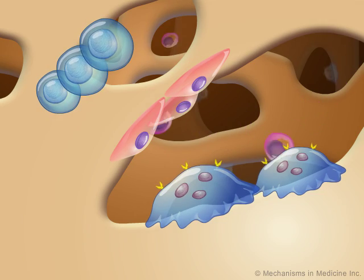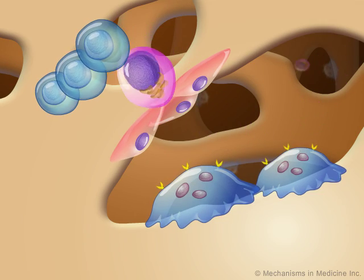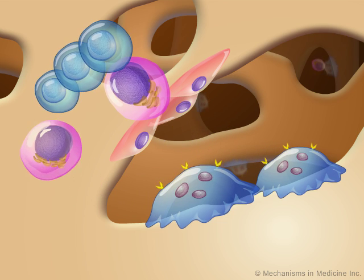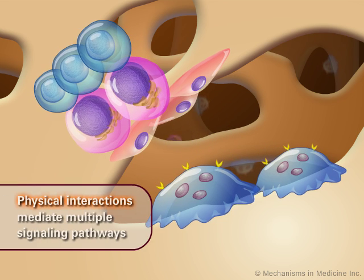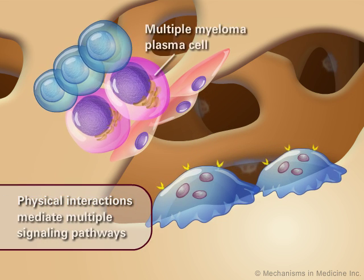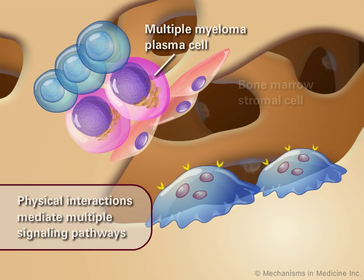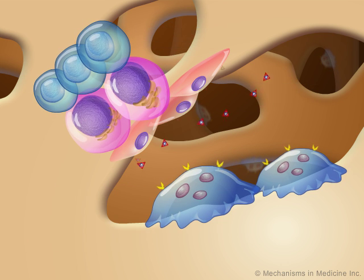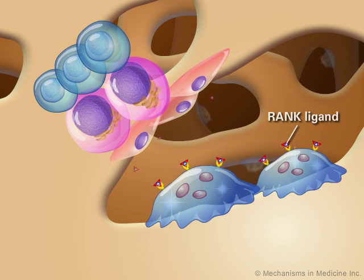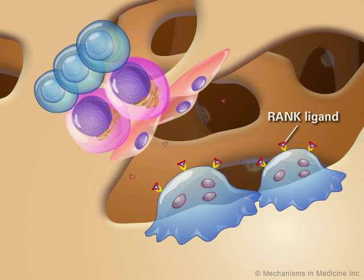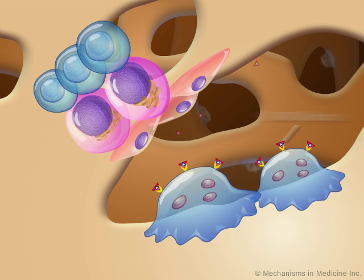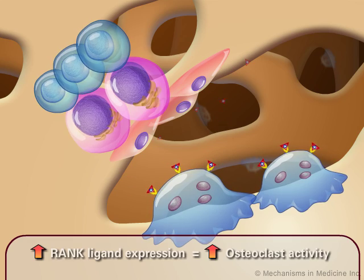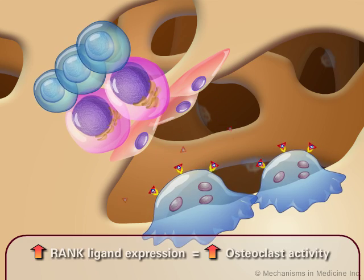This imbalance is maintained through the activation or repression of multiple signaling pathways that are mediated by a variety of physical interactions between multiple myeloma plasma cells and bone marrow stromal cells. For example, RANK ligand-mediated activation of osteoclasts is enhanced due to increased expression and secretion of RANK ligand from bone marrow stromal cells.